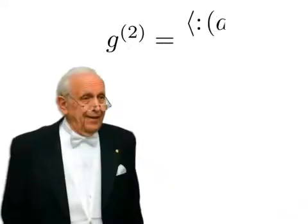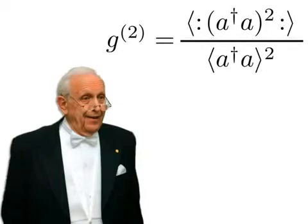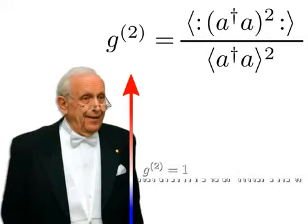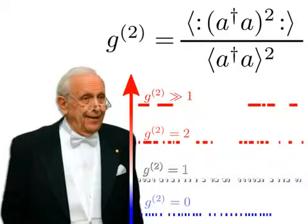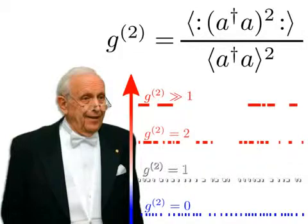Glauber proposed a quantity called G2, defined as shown here, to describe these situations. G2 is equal to 1 for uncorrelated events. It is greater than 1 for so-called bunching events where photons are clustered. It is smaller than 1, ideally 0, for so-called antibunching events when photons avoid each other.